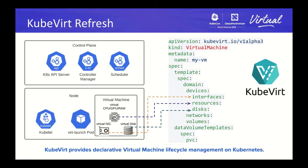KubeVirt joined the CNCF sandbox over a year ago in 2019. It enables workloads that run inside VMs to be deployed on the same Kubernetes cluster as containers. It uses some Kubernetes native objects such as pods, volume claims, and resource claims. It provides a convenient way to describe virtual machine configurations and their states. In this example, a virtual machine that consists of a virtual network interface and virtual disks are described as a devices API inside of the virtual machine. The interfaces API describes how the networks are configured, which network they are attached to — whether that is the Kubernetes pod network or additional networks defined by network attachment definitions.